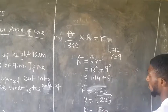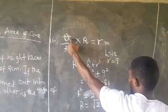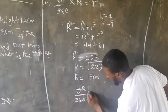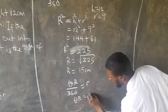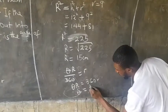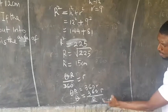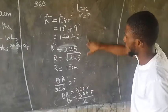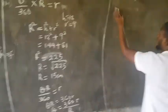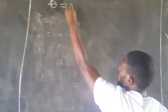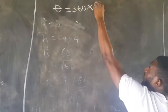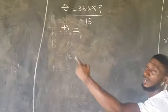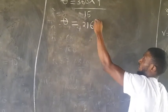Now substituting into θ = 360r/R: θ = 360 × 9 / 15 = 360 × 9 / 15 = 216°. Therefore the angle of the sector is 216°.